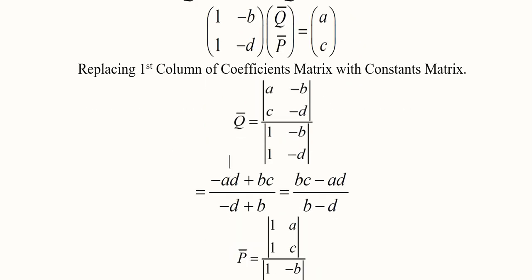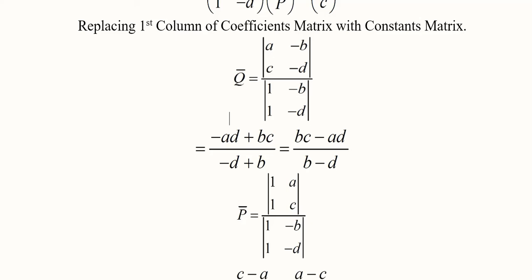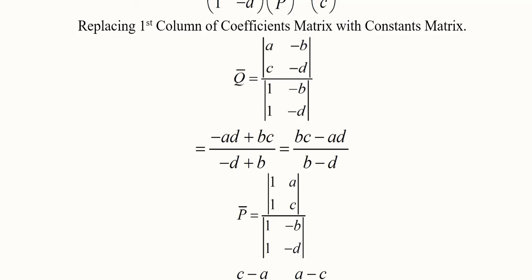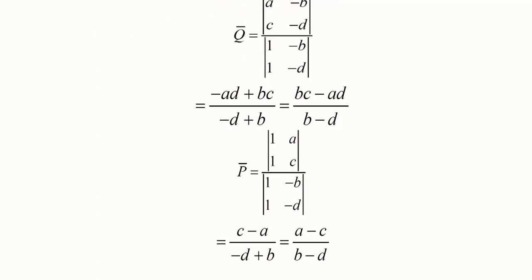We can solve them because they are in determinant form. The determinant of the replacement matrix divided by the determinant of the coefficients matrix — the minus signs cancel — and we obtain the value of equilibrium output Q.